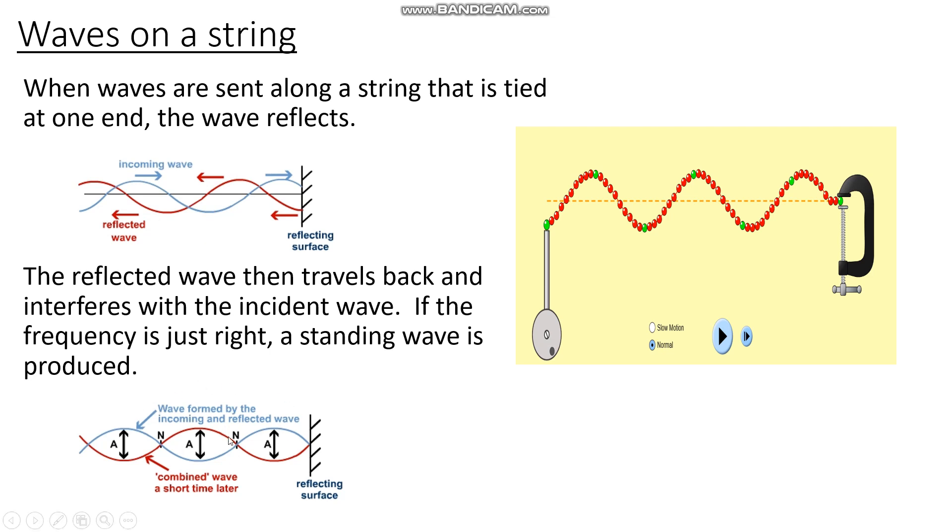Now this is quite an important bit of physics really, because it has implications to how we build buildings and in particular bridges. And if you're interested in looking at a particular example of how a bridge was badly made, type into Google Tacoma Narrows Bridge or follow the link if you're following on the PowerPoint.